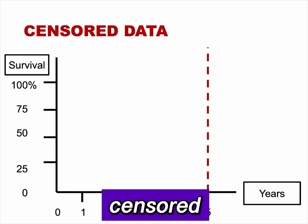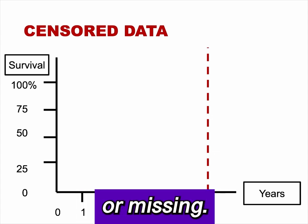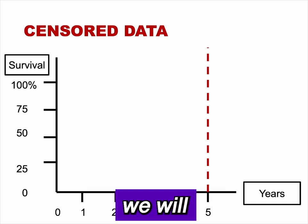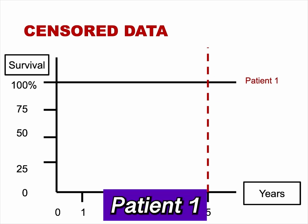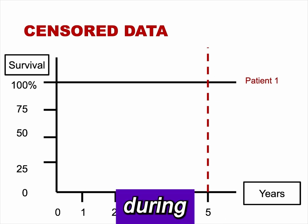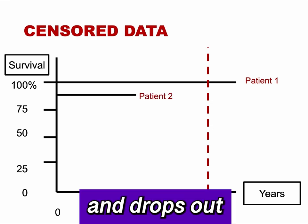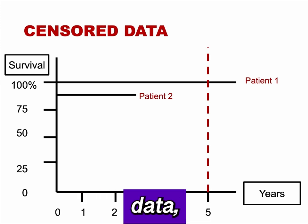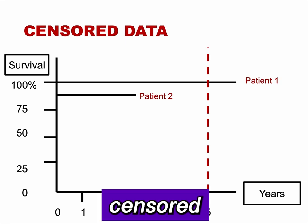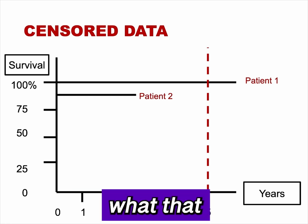Lastly, we'll touch briefly on the concept of censored data. Censored data occurs when the time of a patient's outcome is incomplete or missing. To illustrate, consider a study with a duration of five years, indicated by a dashed vertical line. Patient 1 does not experience the outcome during the study period — their outcome time is at least as long as the study duration. Patient 2 does not experience the outcome and drops out before the completion of the study. These two types are called right-censored data, the most common type. In right-censored data, we know the time to event is greater than some value, but we do not know what that value is.